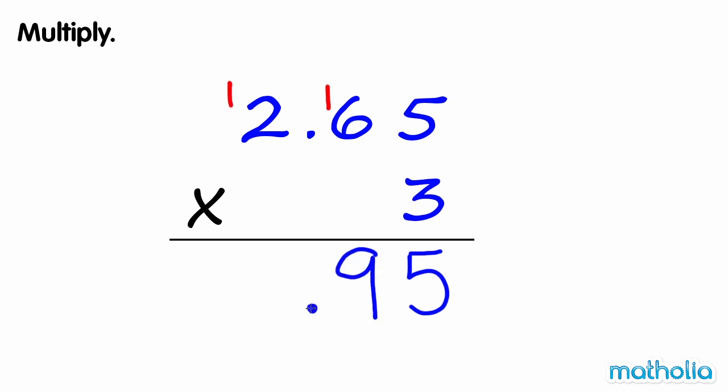Write the decimal point. Multiply the ones. 3 times 2 ones equals 6. 6 add 1 equals 7. So 2.65 times 3 equals 7.95.